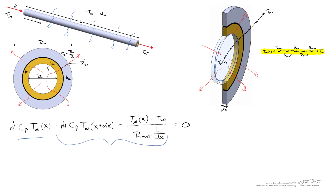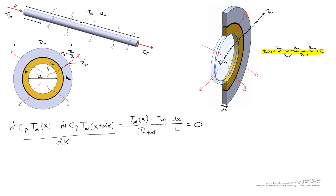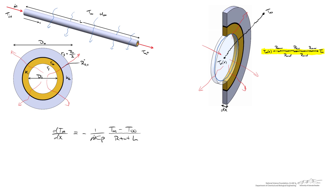Examining the energy balance equation, energy in minus energy out equals zero at steady state. After simplifying the third term and dividing by dx, then taking the limit as dx goes to zero, we are left with negative m-dot c_p times dTm/dx equals the driving temperature difference divided by the total resistance. We then isolate the differential to proceed with integration.